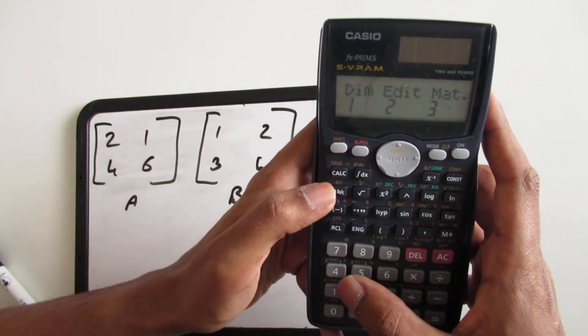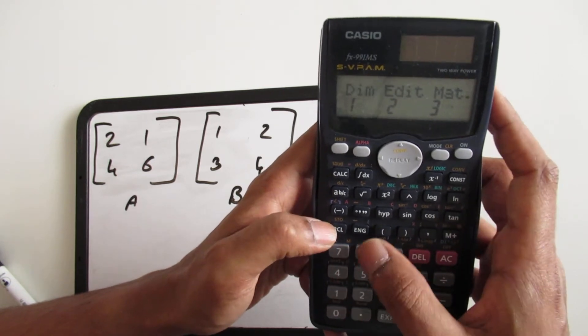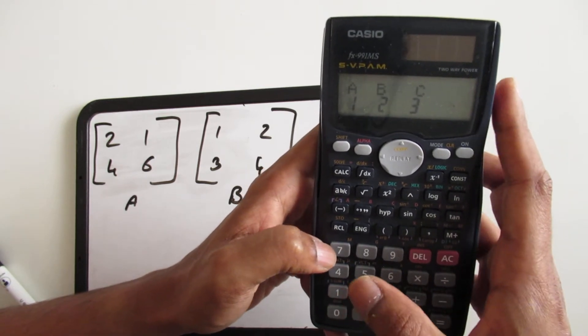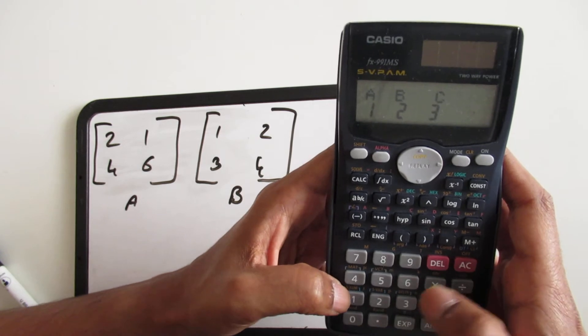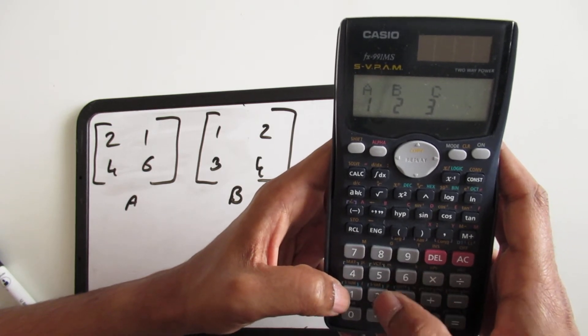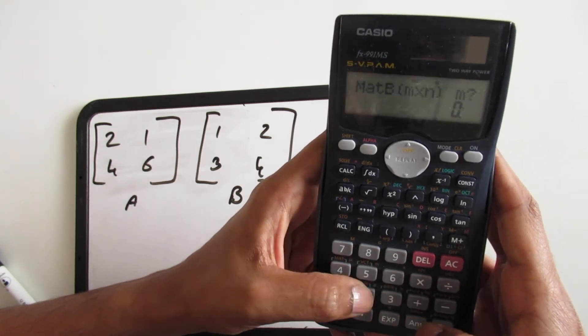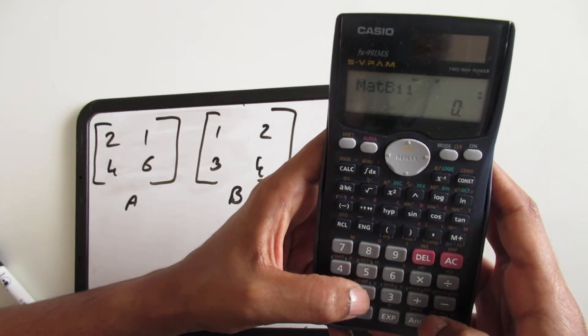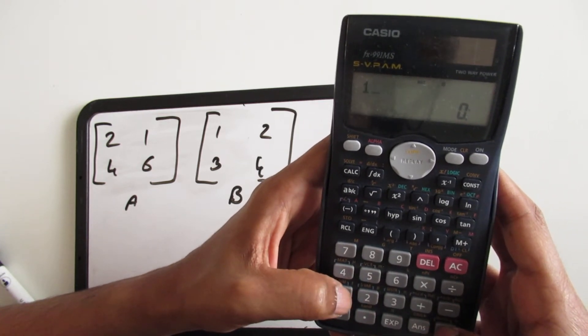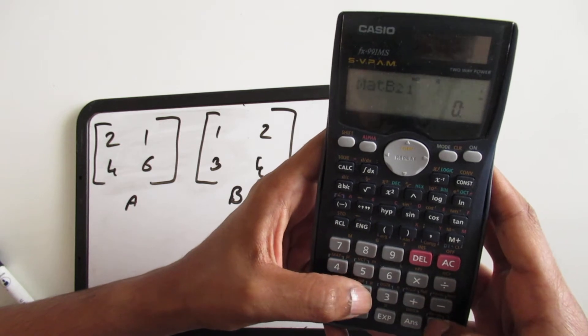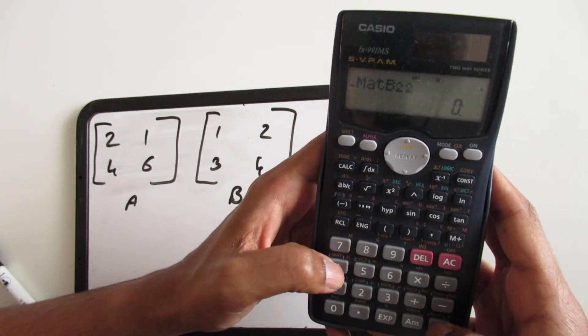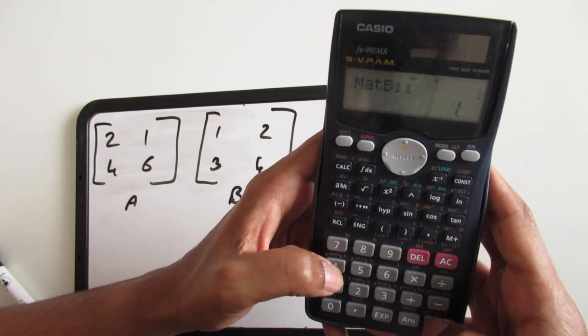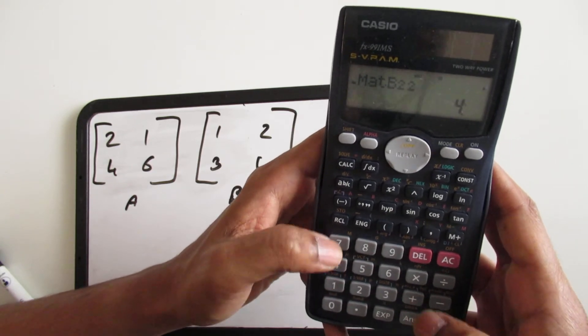Next you go again to shift, press the matrix button, and then dimension. This time we're going to input the values of matrix B, so we're going to press 2. It's going to be a 2 by 2 matrix again and it's going to have 1, 2, 3, and 4. So the two matrices have their values now.